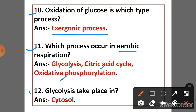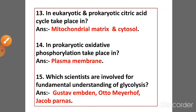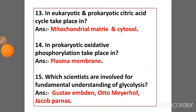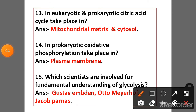Question 12: Glycolysis takes place in the cytosol in both prokaryotes and eukaryotes. Question 13: In both eukaryotic and prokaryotic cells, the citric acid cycle takes place in the mitochondrial matrix.